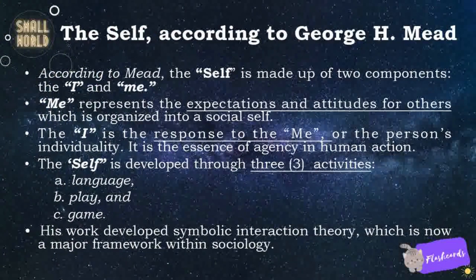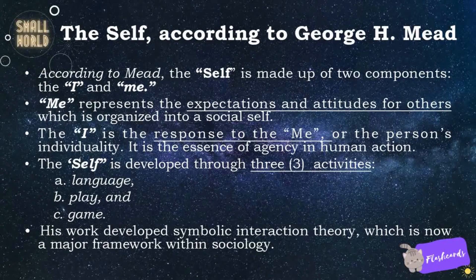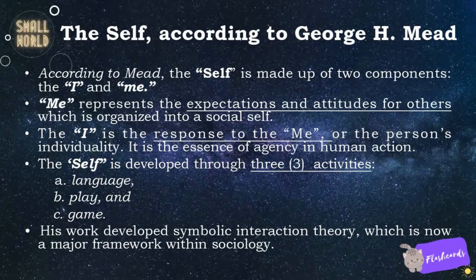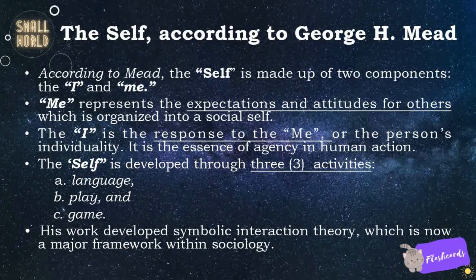The self according to George H. Mead. According to Mead, the self is made up of two components: the 'I' and 'Me.' 'Me' represents the expectations and attitudes of others, which is organized into a social self. The 'I' is the response to the 'Me,' or the person's individuality — it is the essence of agency in human action. The self is developed through three activities: Language, Play, and Game. His work developed symbolic interaction theory, which is now a major framework within sociology.